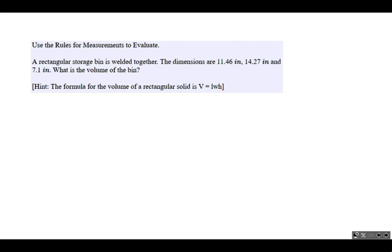All right, use the rules of measurements to evaluate. And let's go ahead and highlight some of the important details here as we read through the problem. A rectangular storage bin is welded together. The dimensions are 11.46 inches, 14.27 inches, and 7.1 inches. What is the volume of the bin?